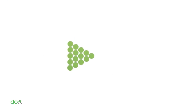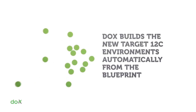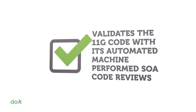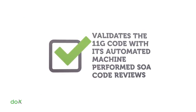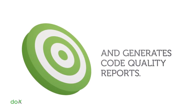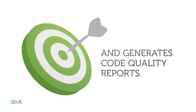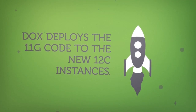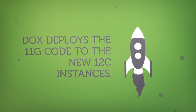Phase 3: DOCS builds the new target 12C environments automatically from the blueprint. It validates the 11G code with its automated, machine-performed SOA code reviews and generates code quality reports. Finally, DOCS deploys the 11G code to the new 12C instances.